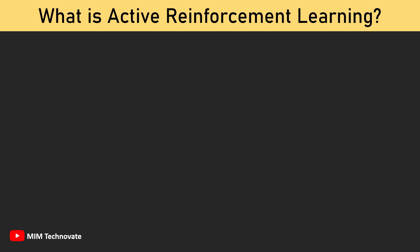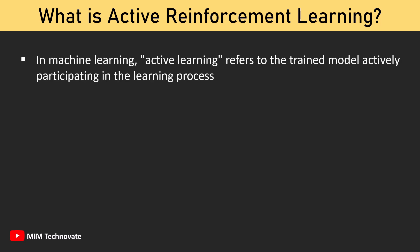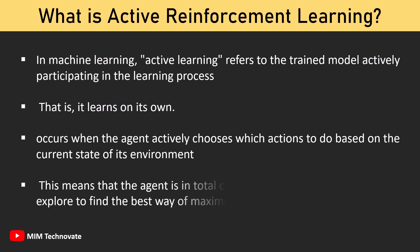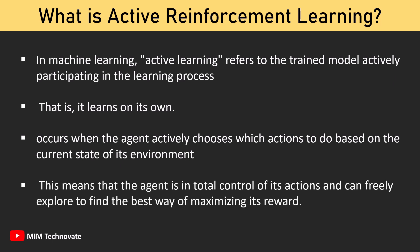What is Active Reinforcement Learning? In machine learning, active learning refers to the trained model actively participating in the learning process — that is, it learns on its own. Active Reinforcement Learning occurs when the agent actively chooses which actions to take based on the current state of its environment. The agent is in total control of its actions and can freely explore to find the best way of maximizing its reward.